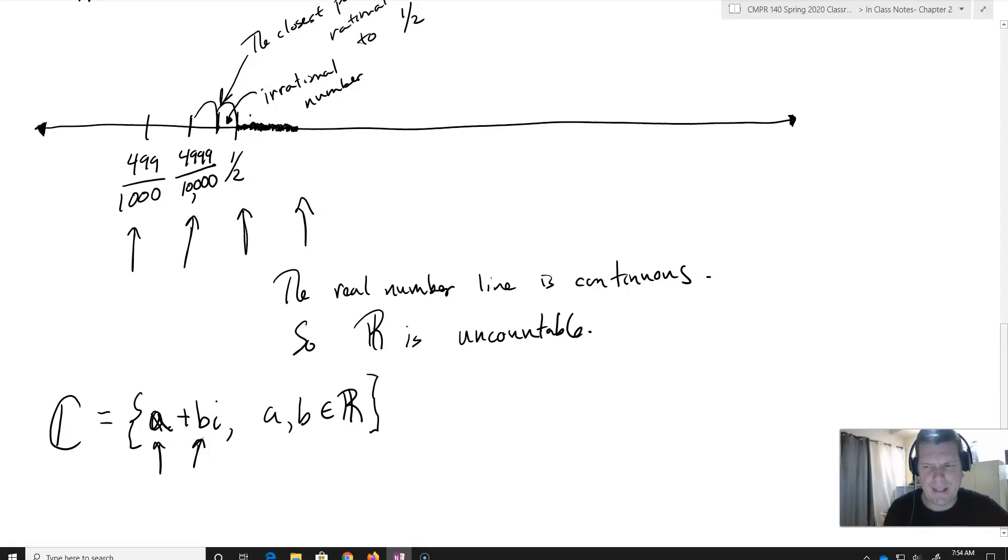In fact, if you kind of think about it, there's got to be infinity times infinity, like an uncountable number of infinities times infinity elements in the complex numbers. So consequently, it's got to be uncountable.